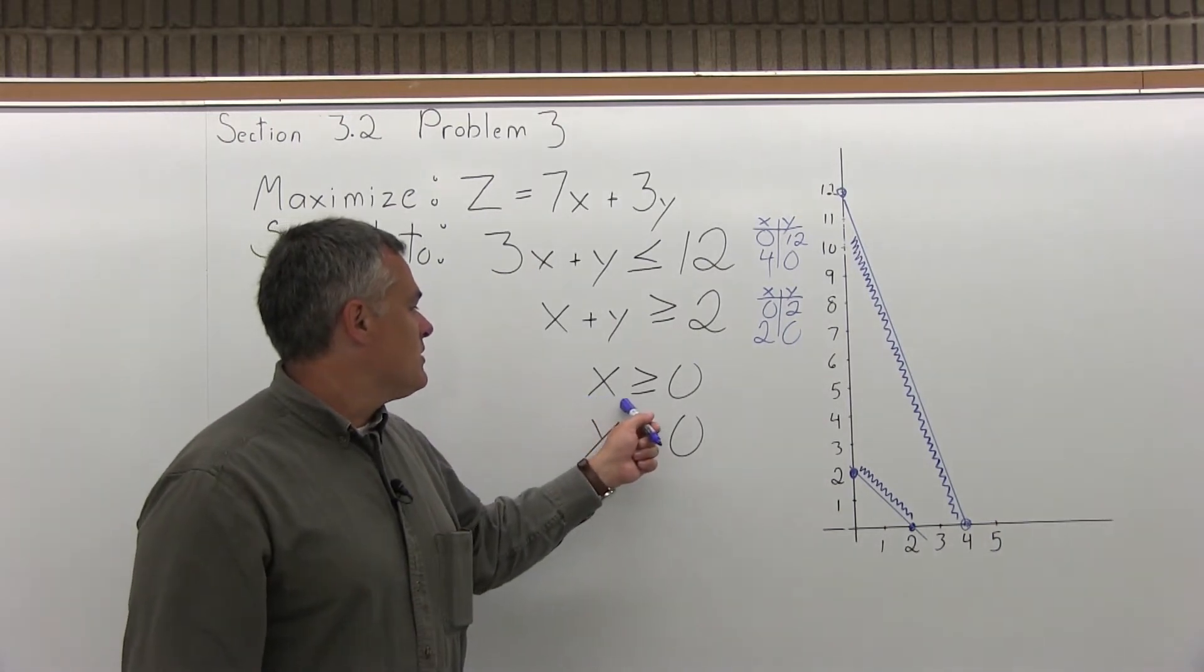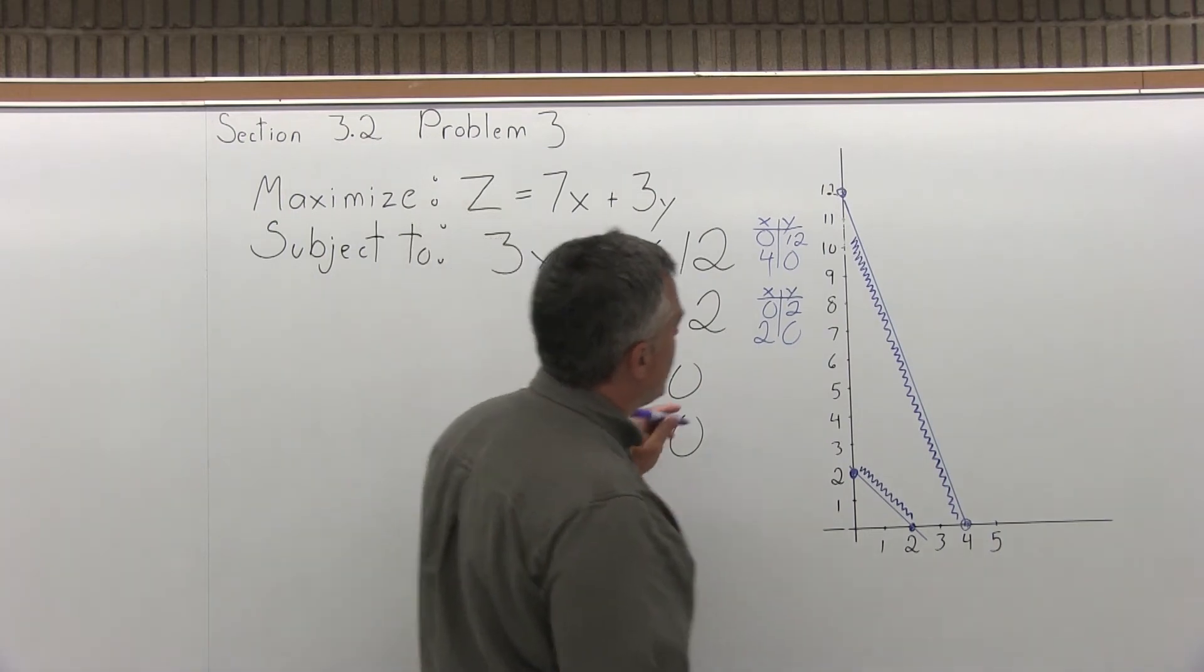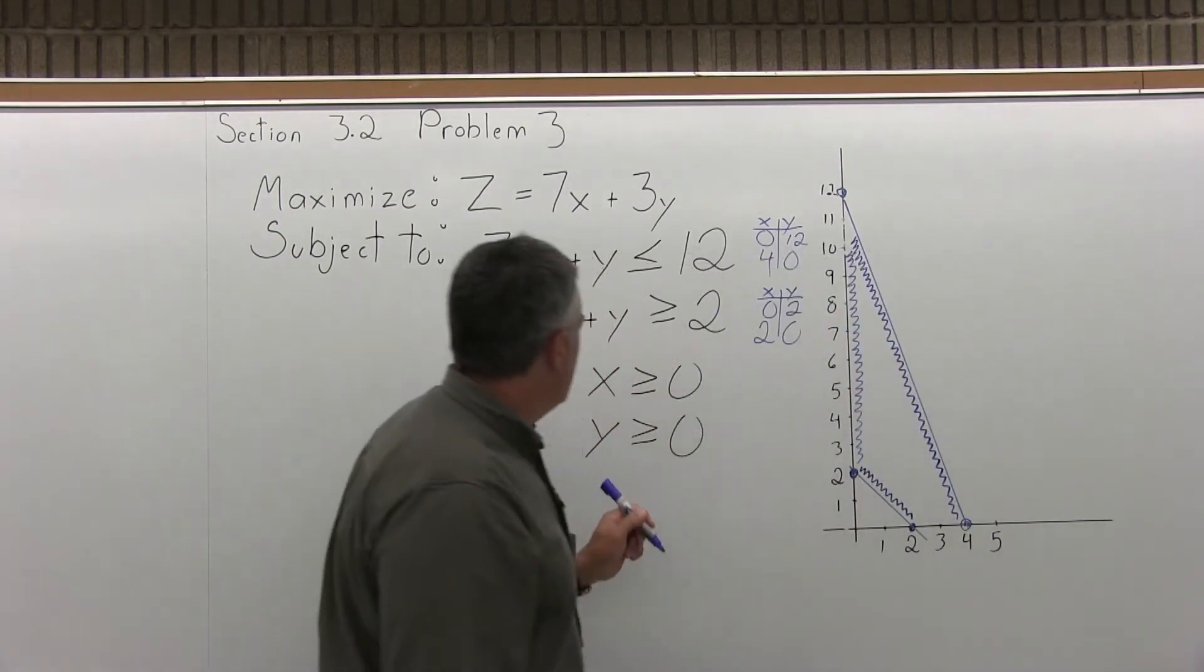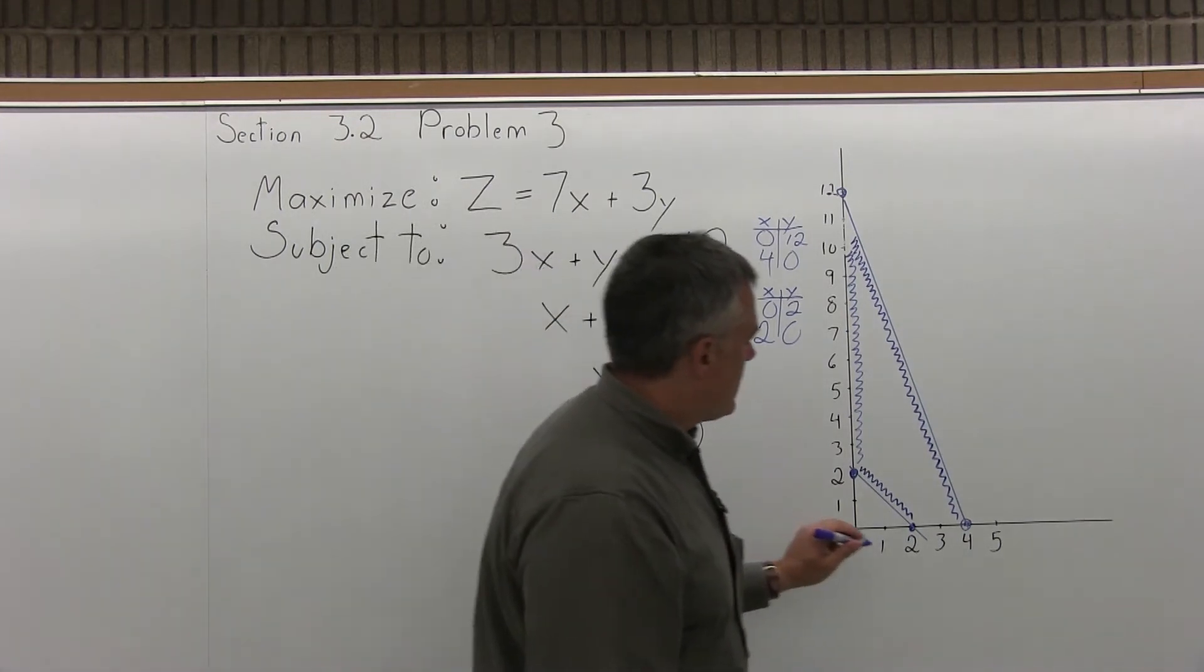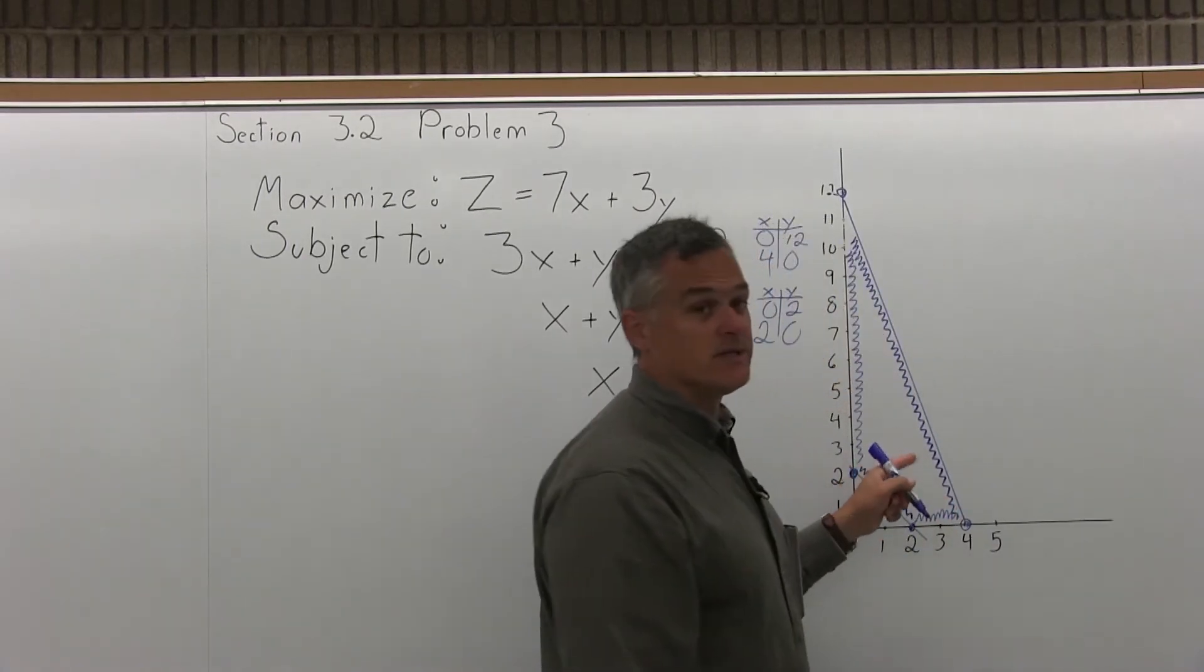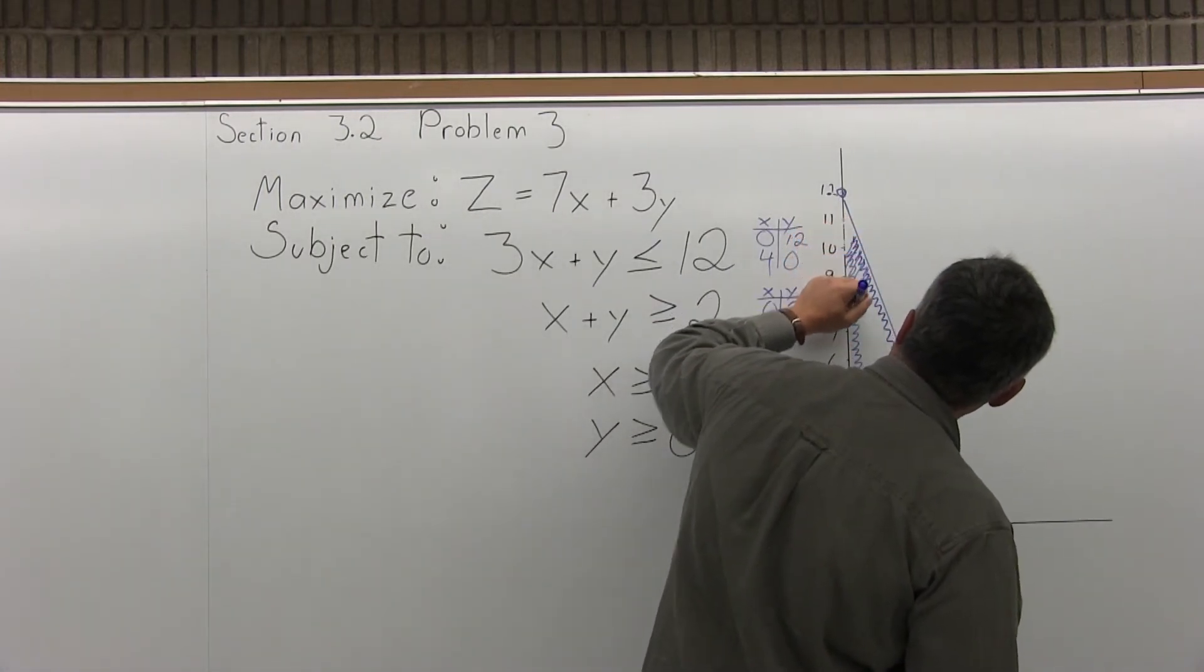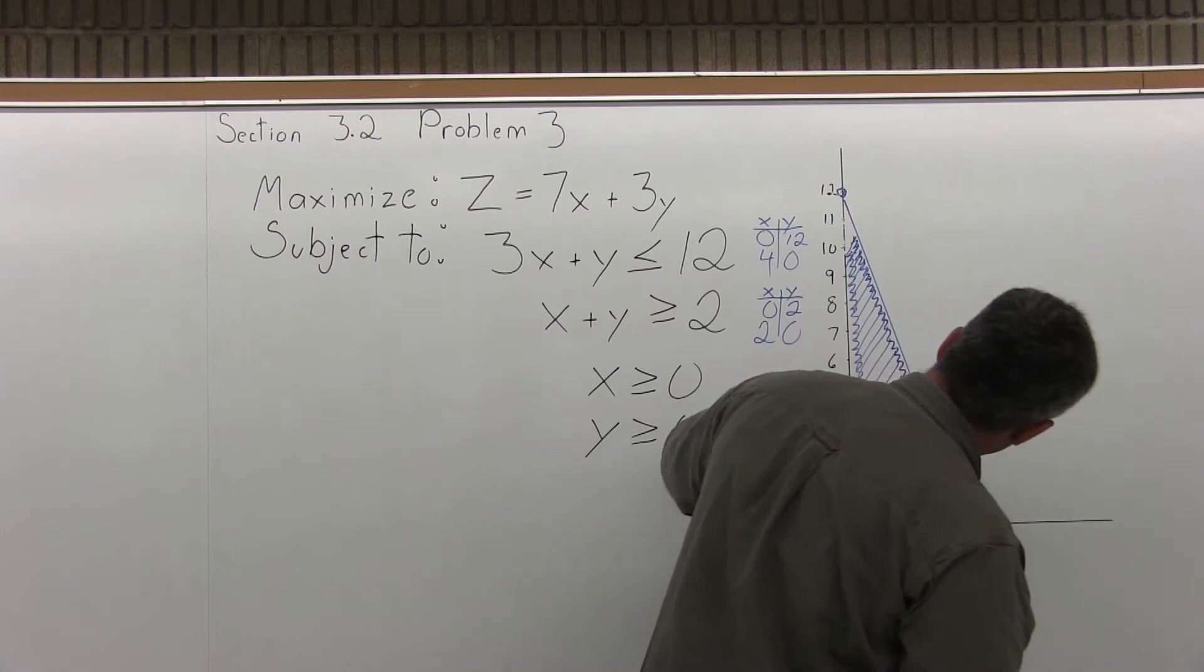Now, the next constraint is x is greater than or equal to 0. It means all the points in our feasible region have to have x coordinates that are positive. It's going to keep us to the right of the y-axis. And the last constraint is y is greater than or equal to 0. It's going to keep us above the x-axis. All the points in my feasible region have to have y coordinates that are positive. So now, my feasible region is everything in this, it looks like a triangle with the bottom corner sliced off a little bit.